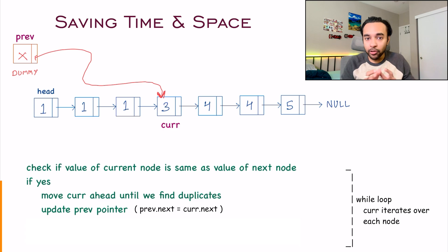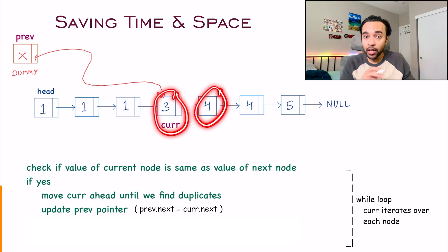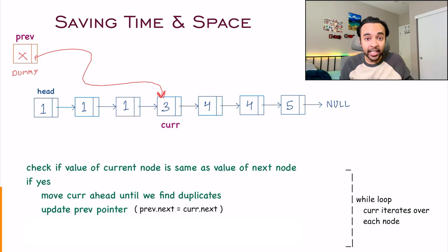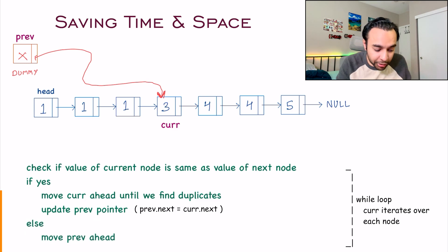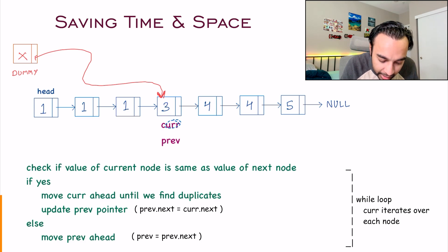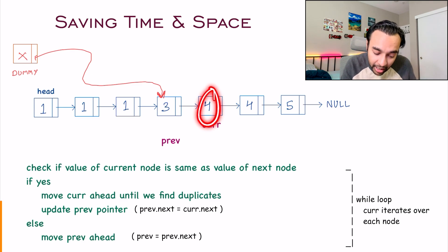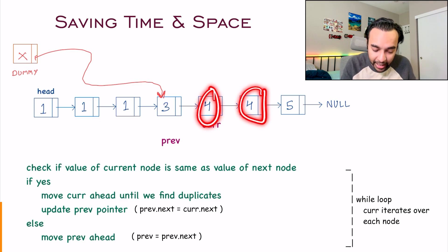And once again, you will do the same thing. Is your current value the same as the next value? No — that means you are at a unique element. So you need to update your previous pointer, and the current pointer will move one step ahead.